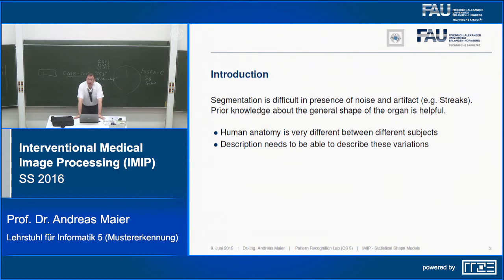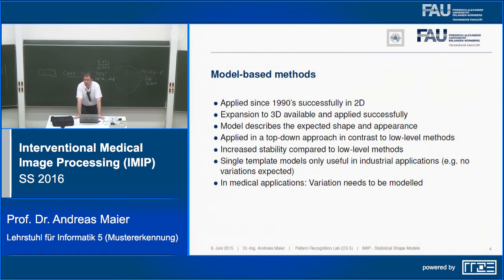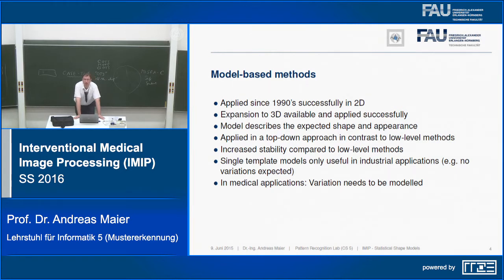With such prior knowledge we get much more stable results — a liver model will produce segmentations within the expected range of liver variations. But be careful: if you supply a head scan and try to segment a liver, the model will still fit a liver. If you have a hammer, everything looks like a nail. Single template models are only useful in industrial applications where no variation is expected, and deviation indicates a fault.